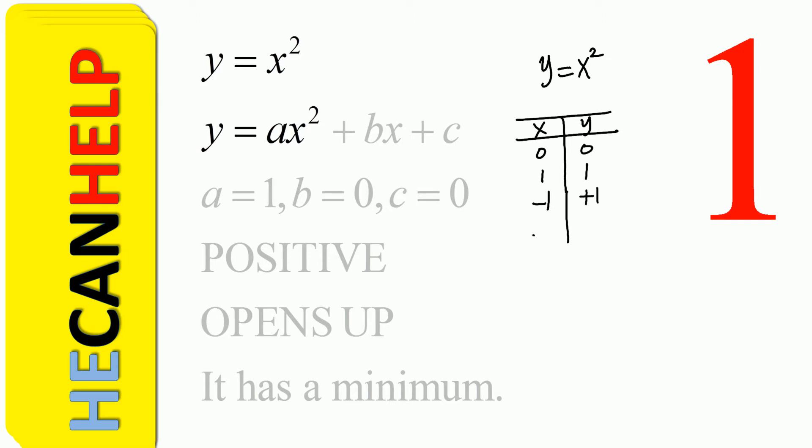How about negative 2? Negative 2 to the power of 2 is positive 4. How about just 2? Positive 4.